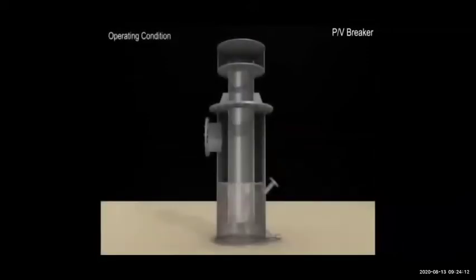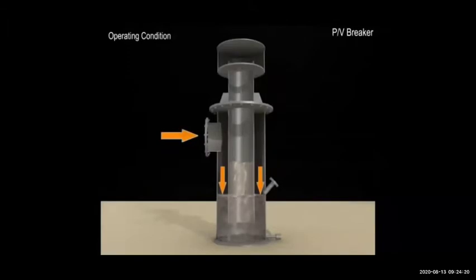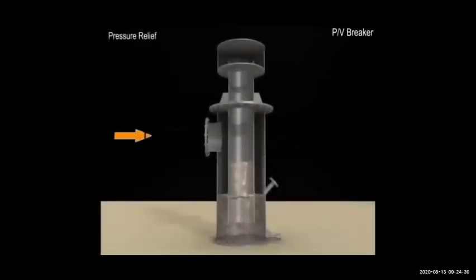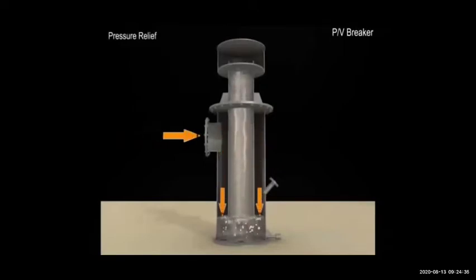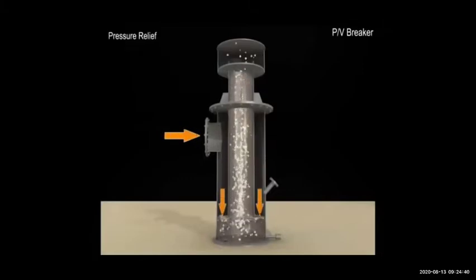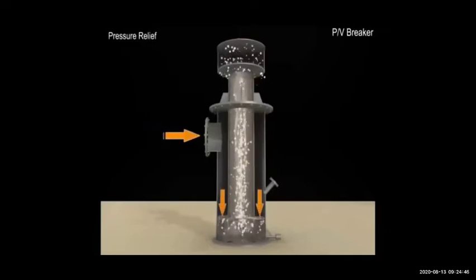Inert gas is coming from the pipeline and pushing the water. Because pressure is normal, it cannot push the water, so the gas keeps passing through to other tanks. But if the pressure is too much, it will push all the water out of the PV breaker and the gas will come out to atmosphere. If water is coming out of the PV breaker, that means pressure is very high. You can also check pressure from CCR sensors.